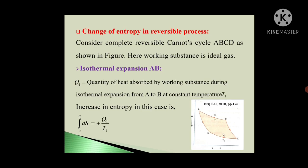Now friends, A to B is Isothermal Expansion and B to C is Adiabatic Expansion. C to D is Isothermal Compression. D to A is Adiabatic Compression. So these are the four steps for this complete Carnot cycle A, B, C, D. Now we will see one by one.